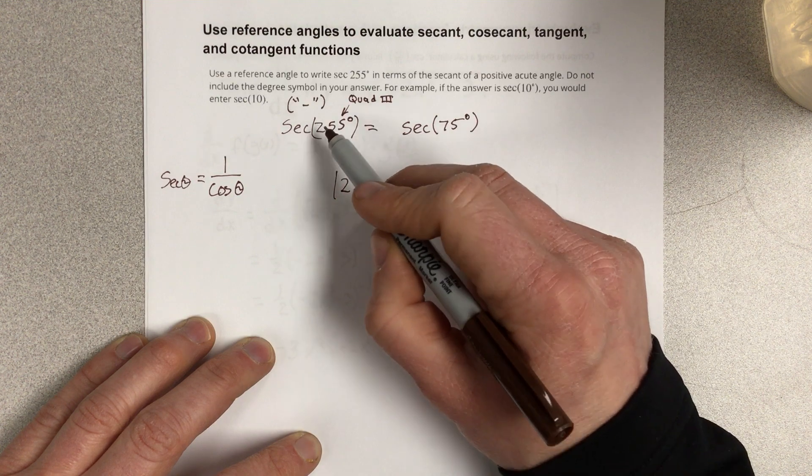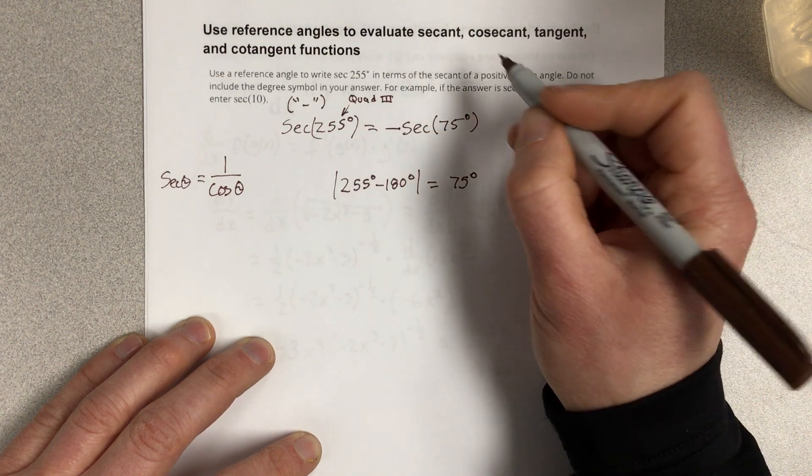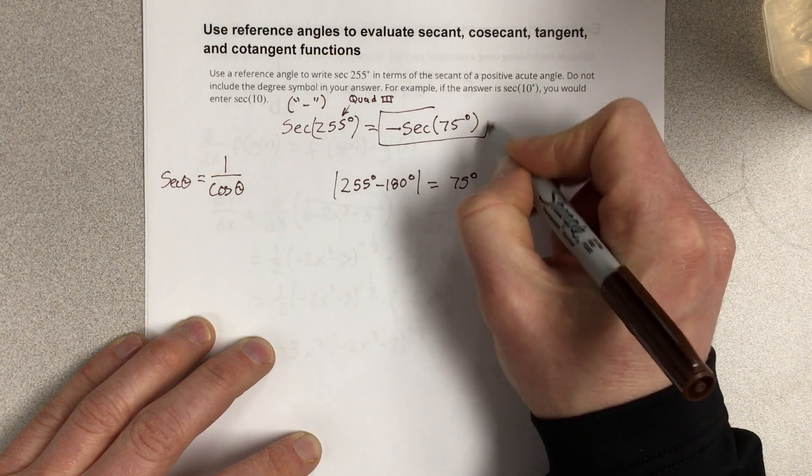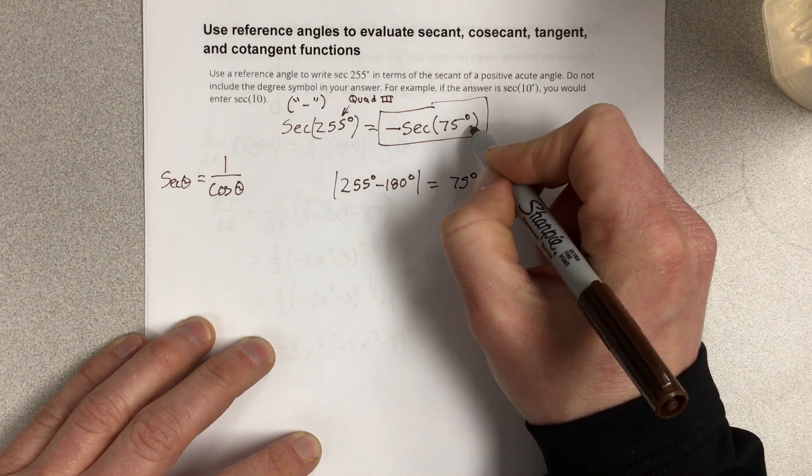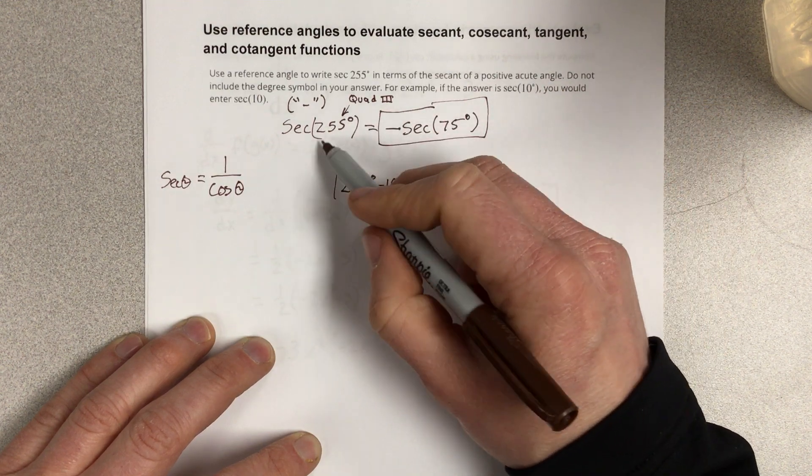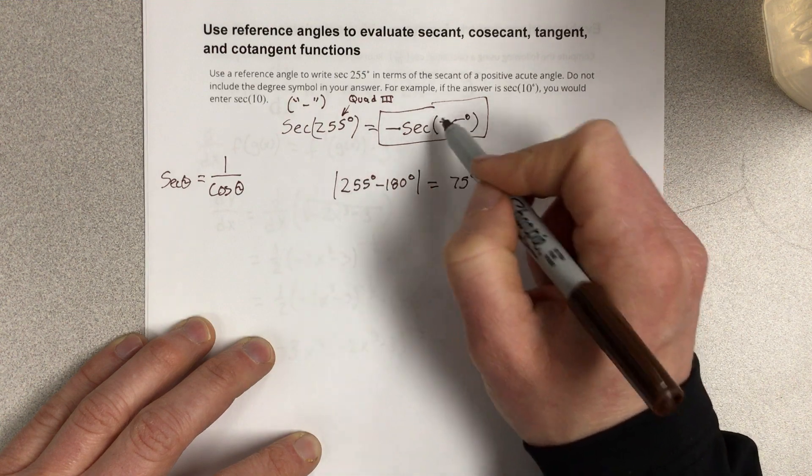Secant 255, that's negative. So, I'm going to offset it by putting a negative out front. So, my solution to this problem would be negative secant 75 degrees is equivalent to secant 255, but it's equivalent in the first quadrant.